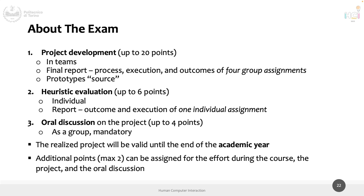This is up to 20 points and will be the vast majority of the exam. These are the two artifacts you deliver. Then at the exam, starting from the day of the exam, we will discuss your project in team. Another thing to deliver before the exam is the heuristic evaluation — evaluated up to six points — which is the individual heuristic evaluation you submitted as part of assignment three. The project development is something you did during the semester. You have to deliver this material up to seven days before the seat — the first seat, the second seat, whichever seat your group decides to enroll for the first time. The heuristic evaluation is already delivered, so we just need to grade it.